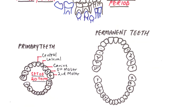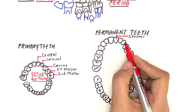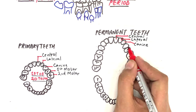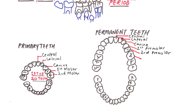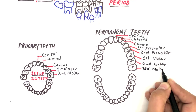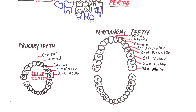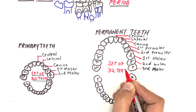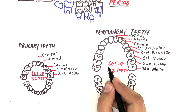The permanent dentition consists of 32 teeth in total. Counting within each quadrant, we have one central incisor, one lateral incisor, one canine, two premolars, and three molars — making up eight teeth in a quadrant and a full set of 32 teeth in the entire mouth.